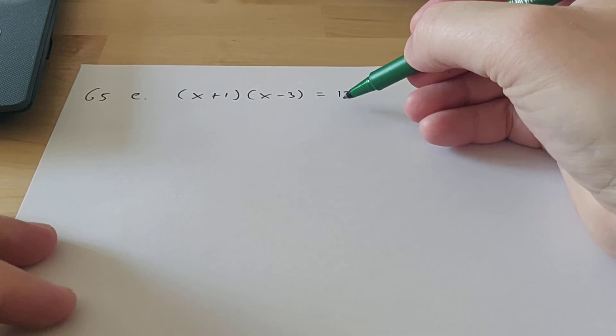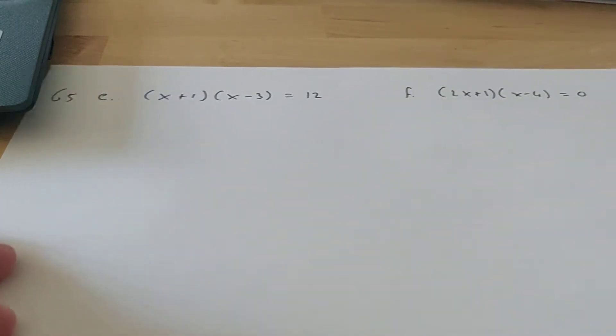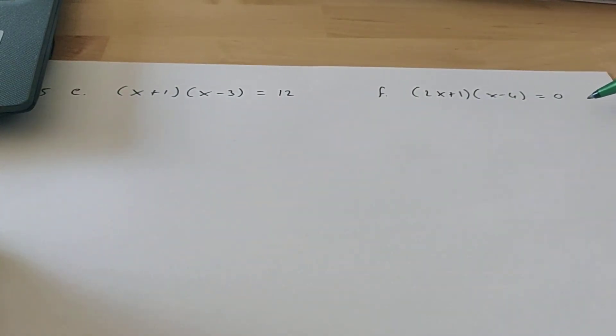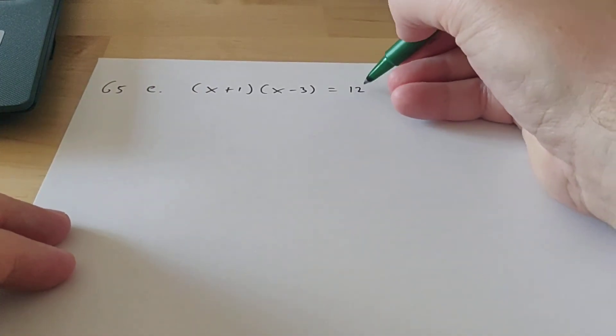Now, if there were a 0 here, then the exercise would be a lot easier. I'm going to show you that in a moment with 65F. If there's anything else than a 0 here, then unfortunately we have to work out these brackets.